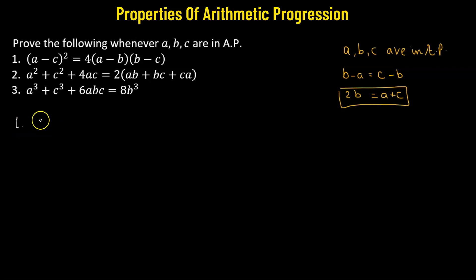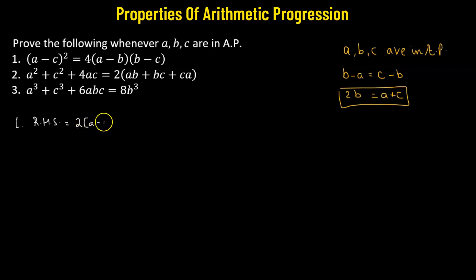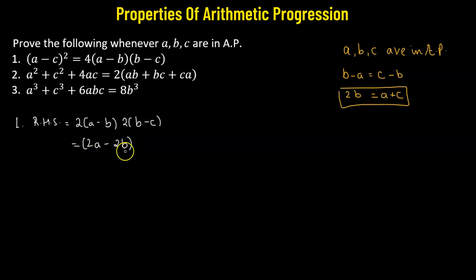Proof number one: we will begin from the right hand side and show that it equals the left hand side. On the right hand side, we have 4(a minus b)(b minus c), but we can split 4 into 2 times 2. So we have 2(a minus b) multiplied by 2(b minus c). Now we'll multiply 2 into a minus b to get 2a minus 2b, and 2 multiplied by (b minus c) gives 2b minus 2c. The reason we did this is so we could replace 2b with a plus c.